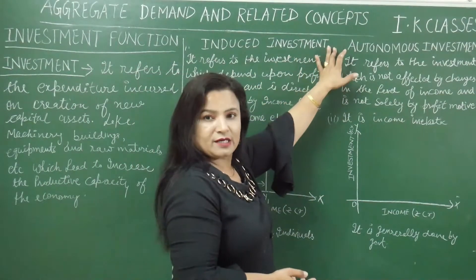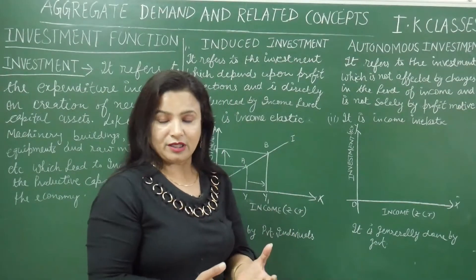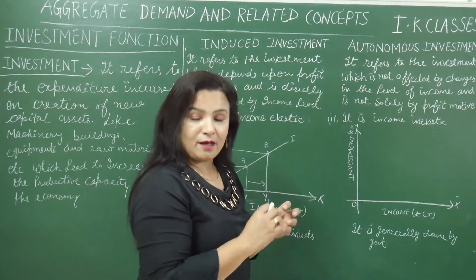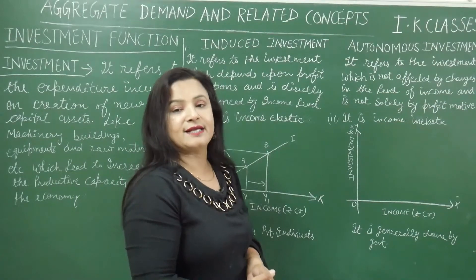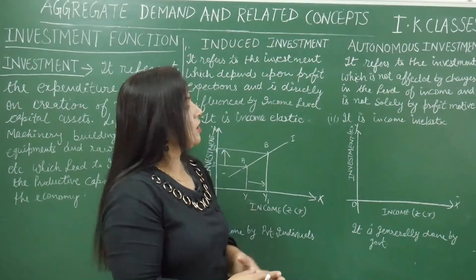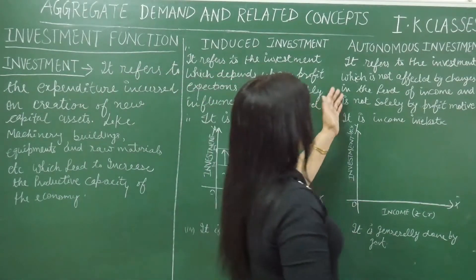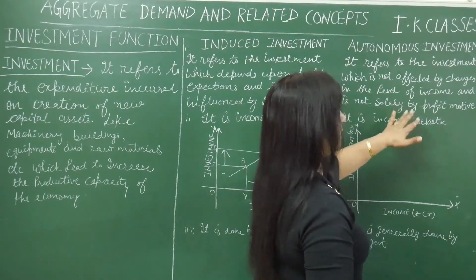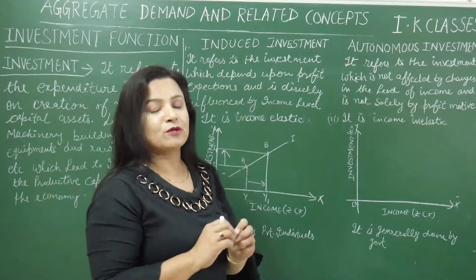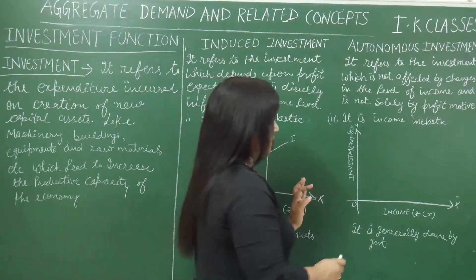The second type is autonomous investment. Just like autonomous consumption — where even when income level is zero, some consumption still occurs — similarly, investment can also occur at zero level of income. This is generally done by the government, which is economically necessary. This type of investment does not depend on the income level, and its motive is not profit. It refers to the investment which is not affected by changes in the level of income and is not solely driven by a profit motive. So it is income inelastic.